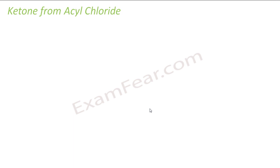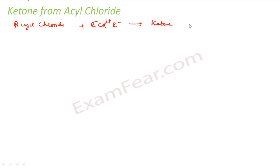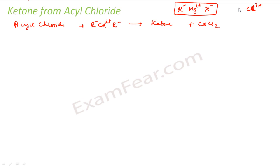From acyl chloride, what we do is if we have acyl chloride, we use CDR2 — dialkyl cadmium — and with this I get a ketone and CdCl2. CDR2 is similar to RMGX. If you see RMGX, it has R minus, Mg2 plus, X minus. If you take CDR2, that is Cd2 plus with two R minus. But since in cadmium the shielding effect is less, the R groups are tightly held, so CDR2 is less reactive than RMGX.